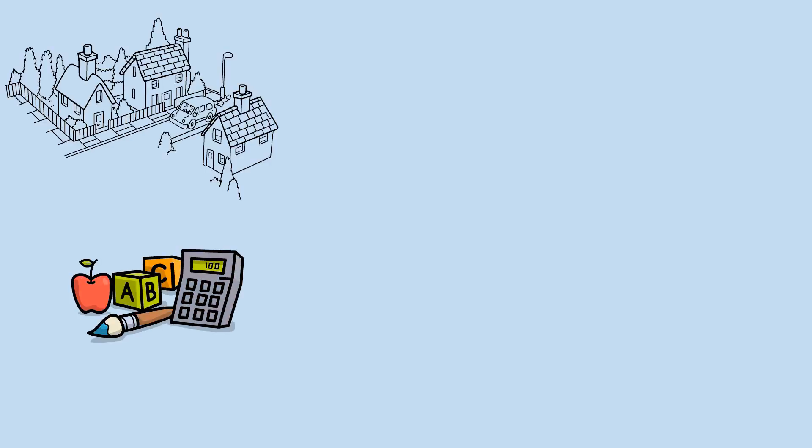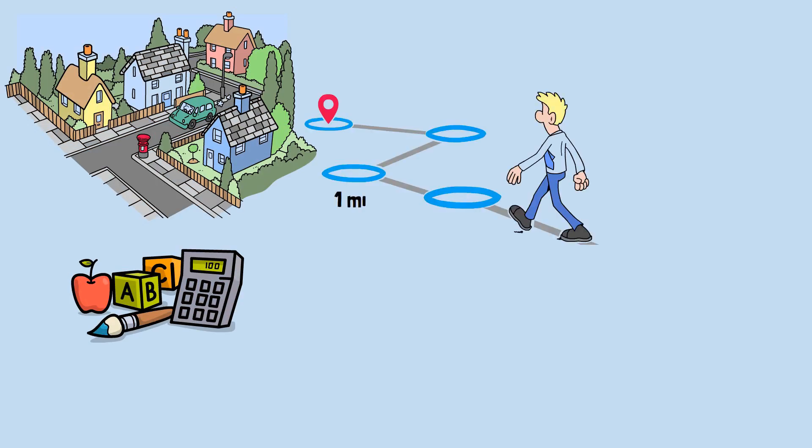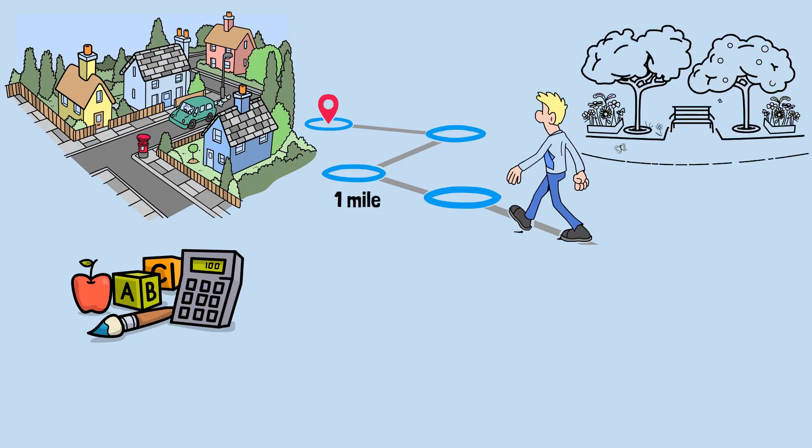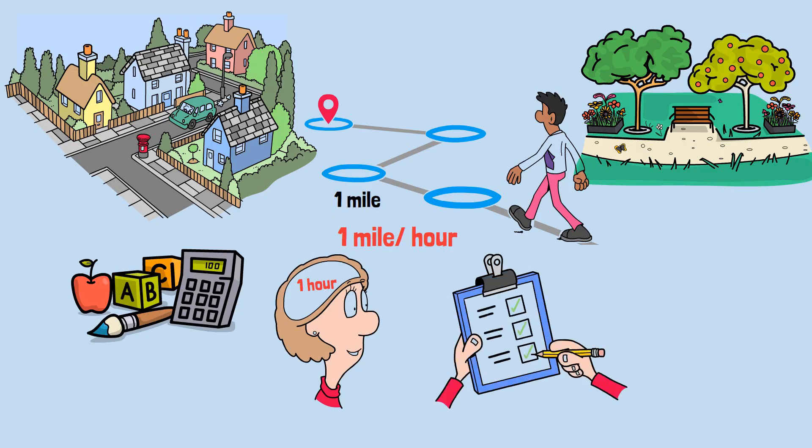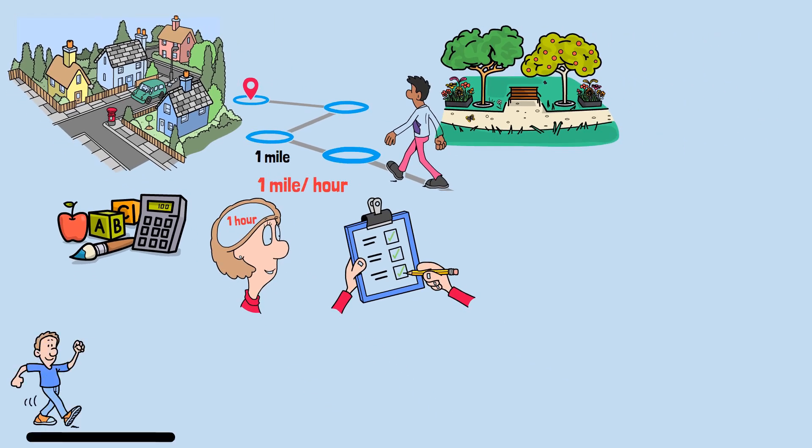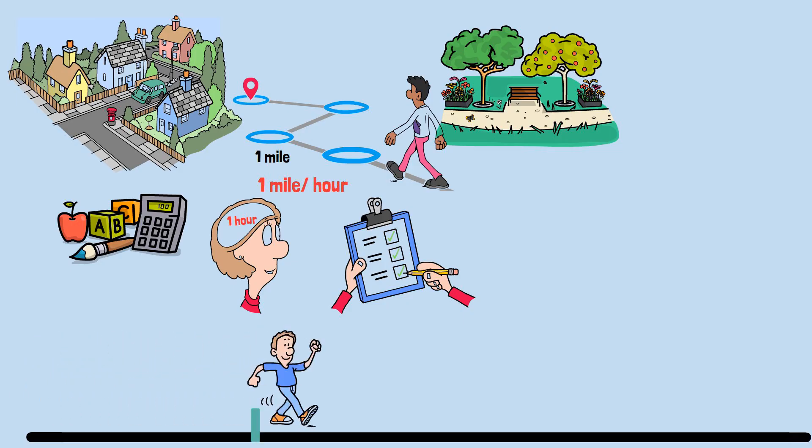Let's put some real numbers to this paradox and see where the mathematics leads us. Imagine Zeno's house is exactly one mile from the park and he walks at a steady pace of one mile per hour. Common sense tells us this journey should take exactly one hour, but let's follow Zeno's step-by-step analysis.